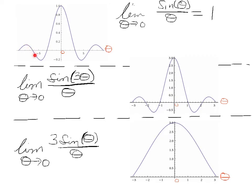So here is a plot of sine theta over theta. Here's the theta axis. And you can see that as theta approaches 0 from the left, the function value approaches 1. And as theta approaches 0 from the right, the function value approaches 1.